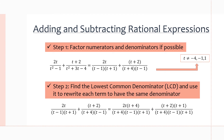We're going to cover both adding and subtracting in the same five steps, because they are pretty much identical processes, and I will show you the only difference later on. So step one: just like with multiplication and division, we want to factor the numerators and denominators for all expressions. This will not only make it easier to find restrictions, but makes it very easy to do step number two. Let's check out this example.